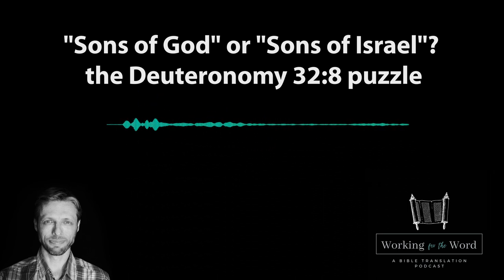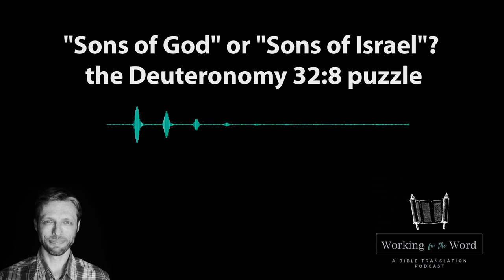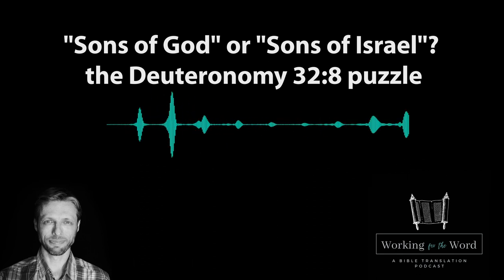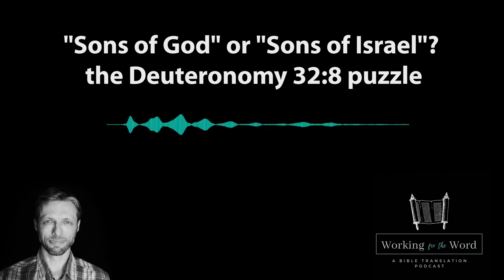Before moving to internal evidence, let's look at some major translations and how they dealt with this. The NIV has 'sons of Israel.' The NLT has 'his heavenly court.' The Berean Study Bible has 'sons of God.' The New American Standard Bible has 'sons of Israel.' The Christian Standard Bible has 'people of Israel.' The Contemporary English Version has 'he assigned a guardian angel to each of them.' The NET Bible has 'according to the number of the heavenly assembly.' And all the old versions — Tyndale, Coverdale, Bishop's Bible, and the Geneva Bible from the 1500s — have 'children of Israel.'